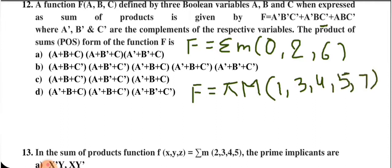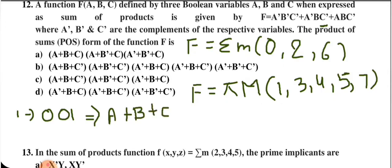Remember that in max terms, 0 represents the direct variable and 1 represents the complement. For minterm 1 (001): written as A+B+C̅.